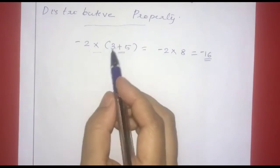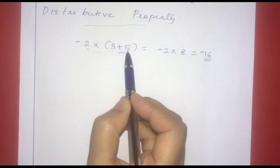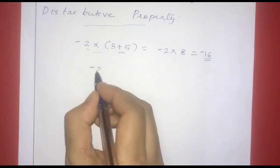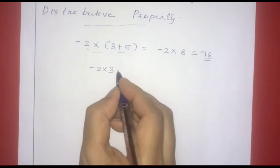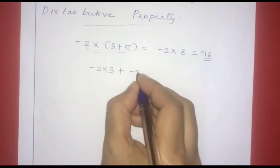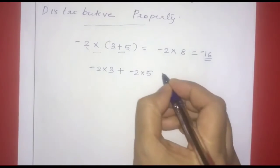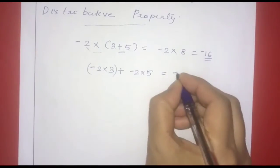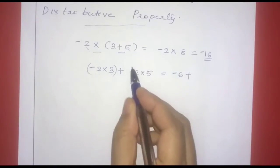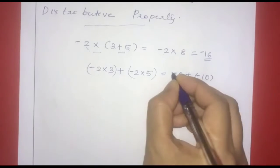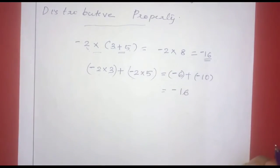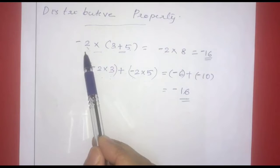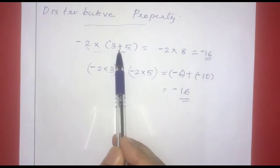Now we distribute: negative 2 into (3 plus 5) equals negative 2 into 3 plus negative 2 into 5. That is negative 6 plus negative 10, which equals negative 16. This is the distributivity of multiplication over addition.